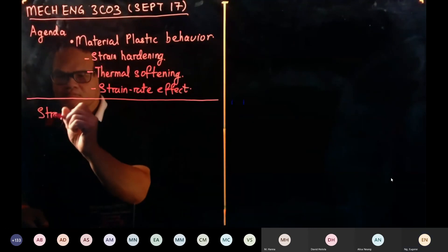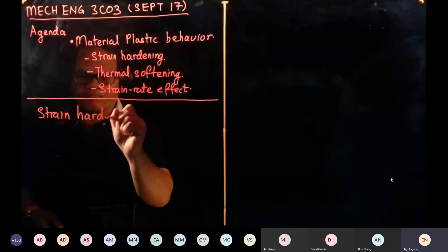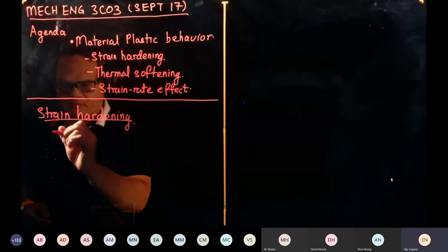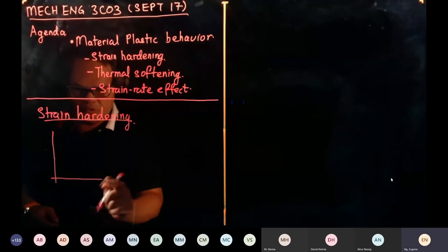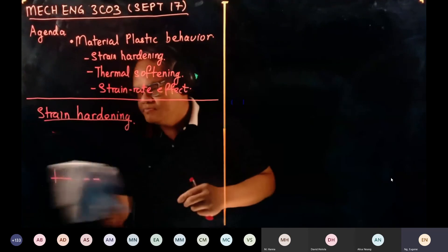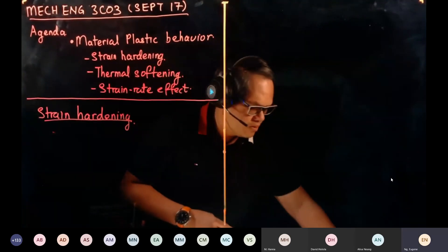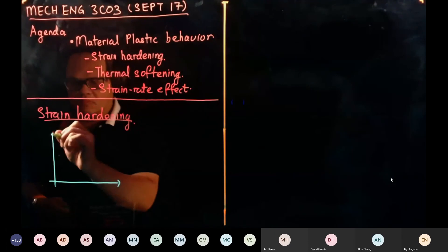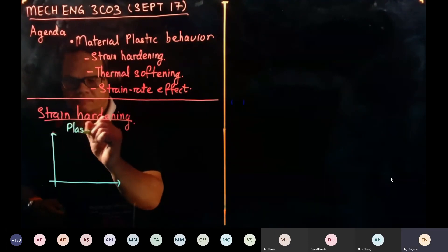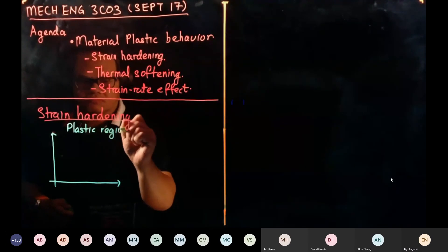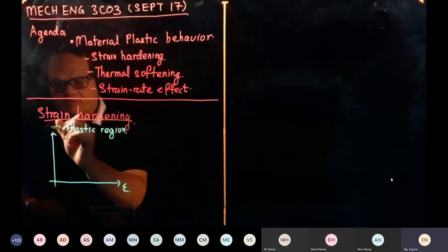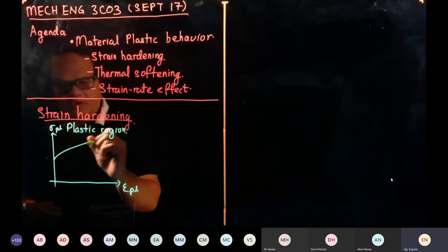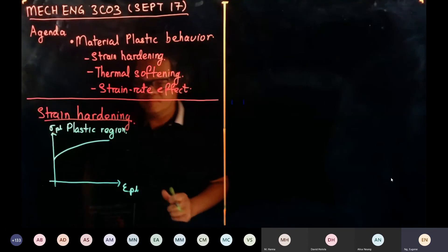Let's recap where we finished off last week — strain hardening. We have a stress-strain curve, and we are going to focus on the plastic region. We have epsilon on the x-axis and stress on the y-axis, and we have the material behavior going in that trend through the plastic region.